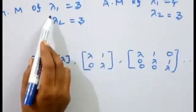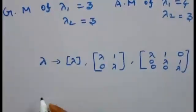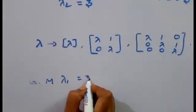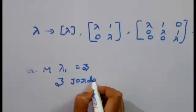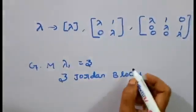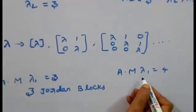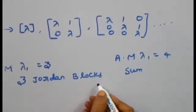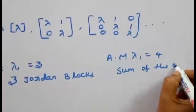The number of Jordan blocks for an eigenvalue equals its geometric multiplicity. The geometric multiplicity of λ1 is 3, so λ1 has 3 Jordan blocks. The algebraic multiplicity of λ1 is equal to 4, which equals the sum of the orders of those Jordan blocks.